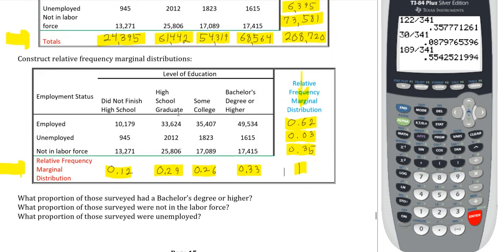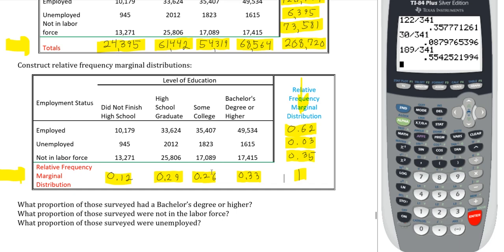Looking at relative frequencies: what proportion of those surveyed had a bachelor's degree or higher? That's just reading the marginal relative frequency for that column — 0.33. What proportion were not in the labor force? Again no condition given, so it's everybody: 0.35. What proportion were unemployed? That's the second row total divided by everyone: 0.03.